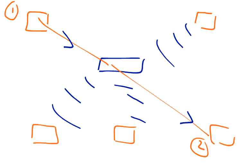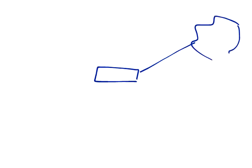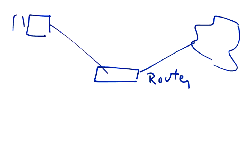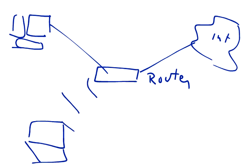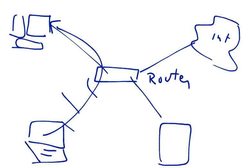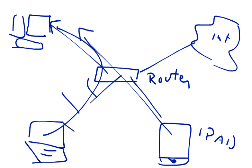Nowadays we usually use star networks in our homes. For example, we have an internet connection with a triple-play router, and that router is connected to our desktop so we can share the internet connection. That router is also connected to a laptop, and we can also connect a tablet or iPad, and all of these devices can communicate with each other. This is the most common type of topology used in our homes.